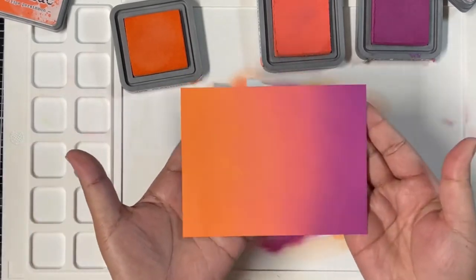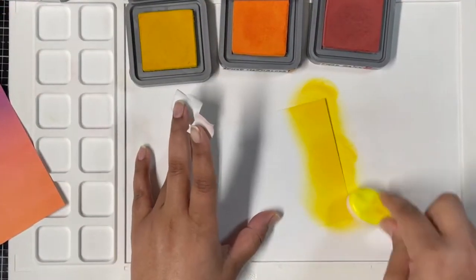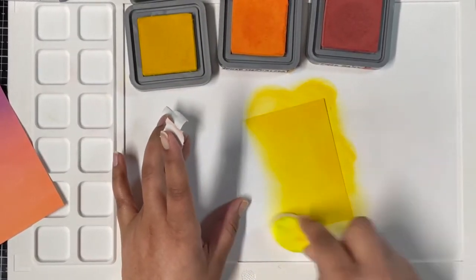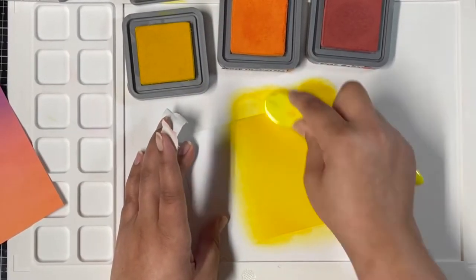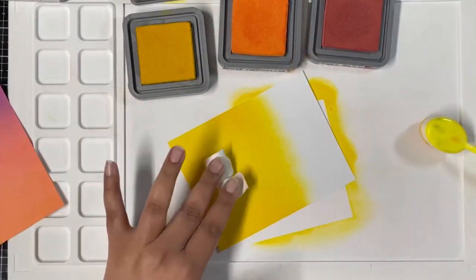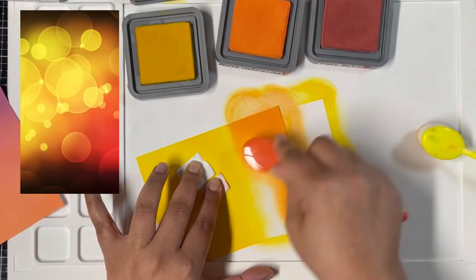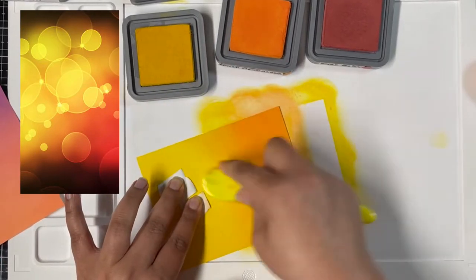For my next background, I'm starting with Mustard Seed, covering almost one-third of my A2 size panel. I wanted to have this bright yellow color in the center and bring in the dark shades from top and bottom, concentrating more darker colors toward the bottom and a little on top. This picture on the left from Pinterest was my inspiration for this background.